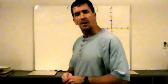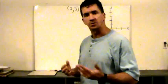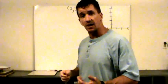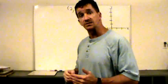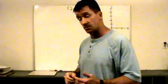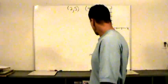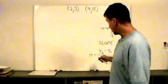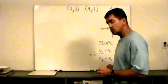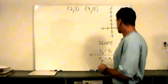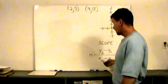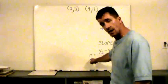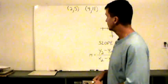Hi everyone, in this video we're going to talk about lines, slopes of lines, equations of lines, lines that are parallel and also perpendicular. This is the slope equation of a line: y sub 2 minus y sub 1 over x sub 2 minus x sub 1, where m represents slope.